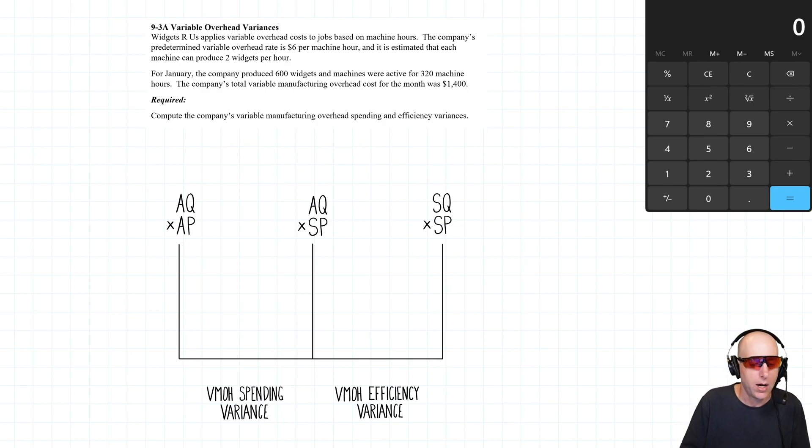AQ, AP, and AQ – the actual quantity for overhead here, variable overhead, is going to be machine hours, so we're looking for machine hour numbers. The company's predetermined variable overhead rate is six dollars per machine hour, and it is estimated that the company can produce two widgets per hour. Those are standards.